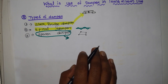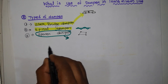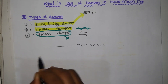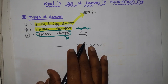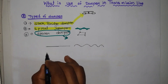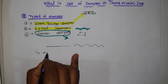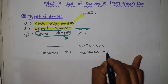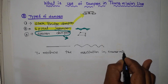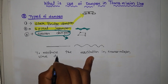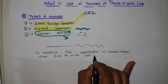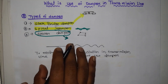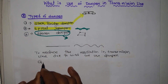Sometimes the wind is flowing, and due to the wind the transmission line conductor can oscillate. Due to this oscillation, some damage can occur. To reduce the oscillation in the transmission line due to wind, we use a damper.